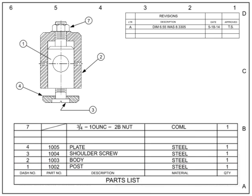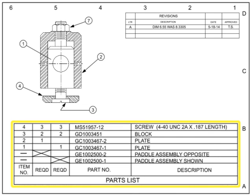Other useful information typically found in the parts list includes material, material specs, heat treatment requirements, size, weight, flag note indicators, and finishing processes. For drawings that show multiple configurations of an assembly, additional columns indicate the quantities of sub-components that make up each assembly. Shown is an example of a drawing with multiple assemblies, where an X indicates the appropriate quantity column per assembly.